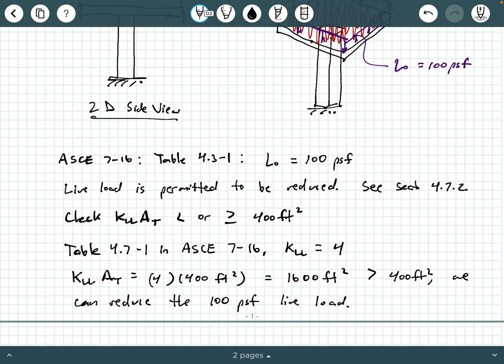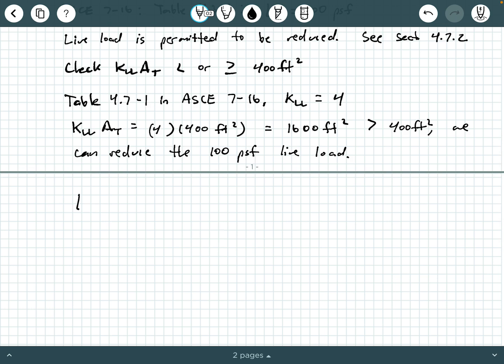So again, we got to always check that K_LL A_T is 400 square feet or more in order to reduce this live load. So now we can use our reduction equation L equals L_0 open parentheses 0.25 plus 15 divided by square root K_LL A_T close parentheses. And again, we need to compare that to a lower limit according to 4.7.2. So if you refer to ASCE 7-16, it says L shall not be less than 0.5 L_0 for members supporting one floor.